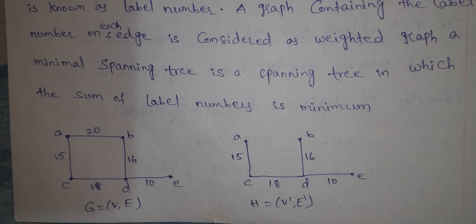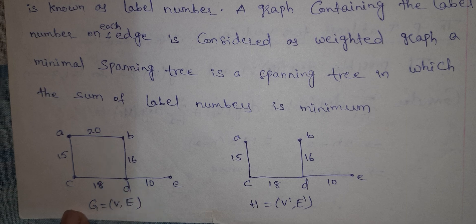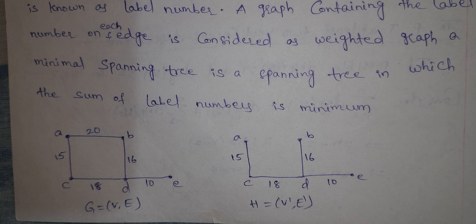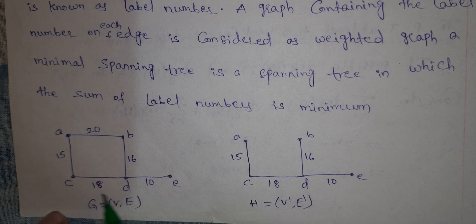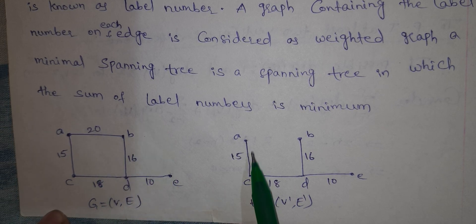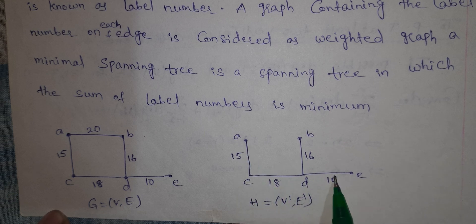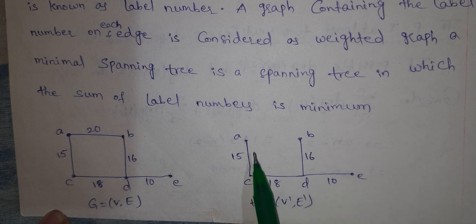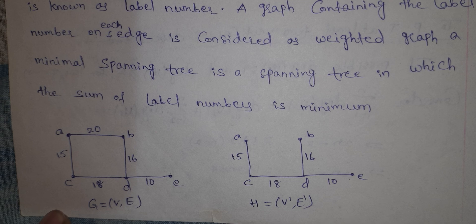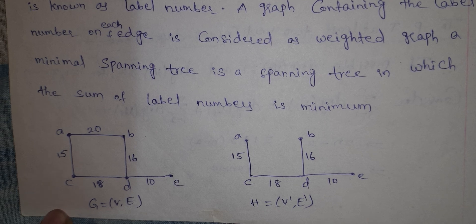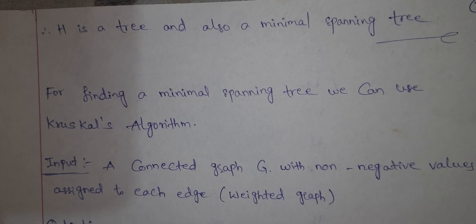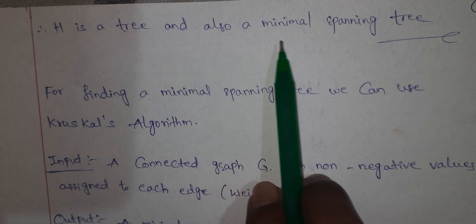Here is graph G. Now the graph has a cost. We have to go from one place to another — you can travel and choose the minimum cost path. The highest number here is 20. If you have a route with edge E, you need to delete that edge. H is a tree and also a Minimal Spanning Tree.